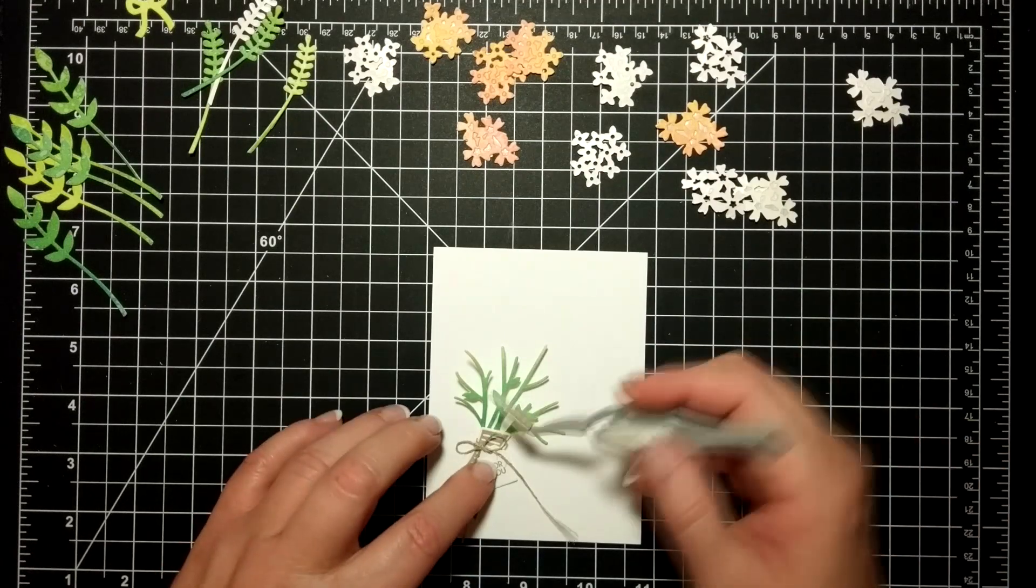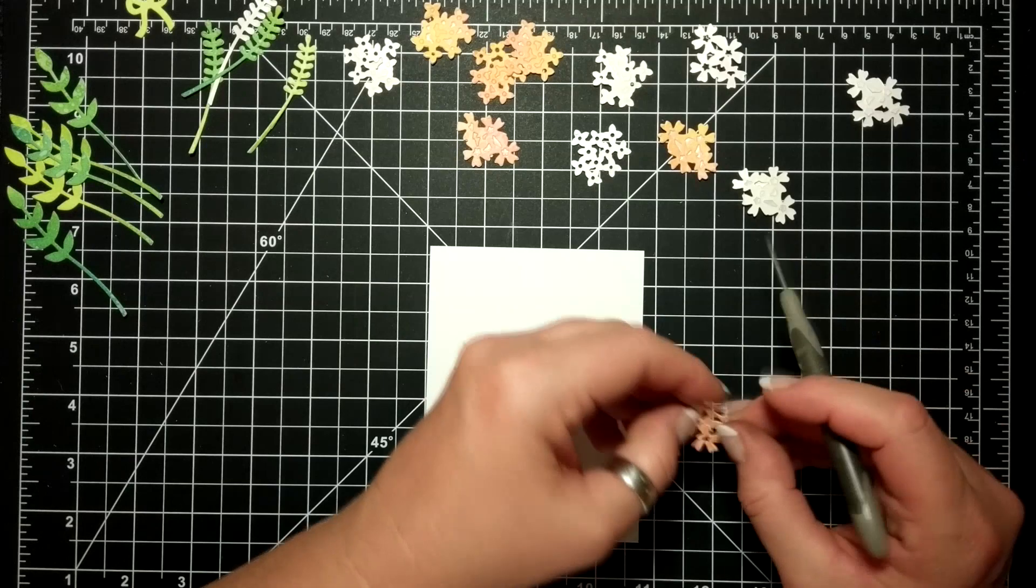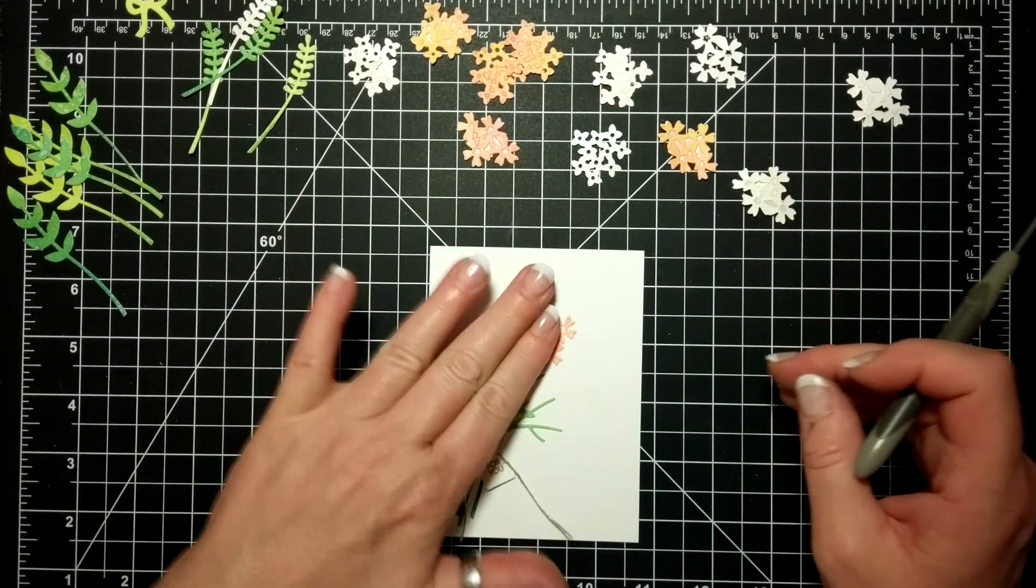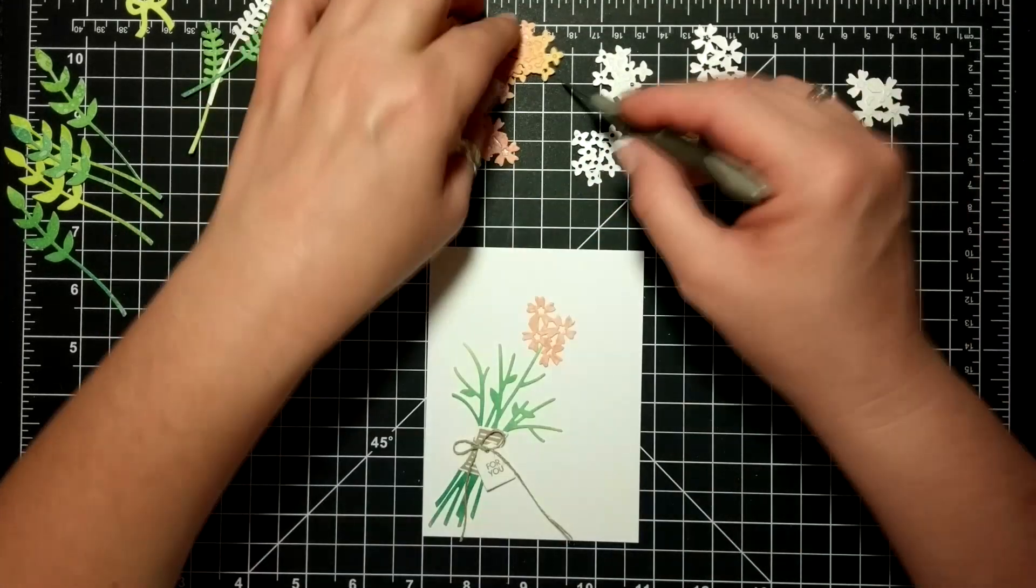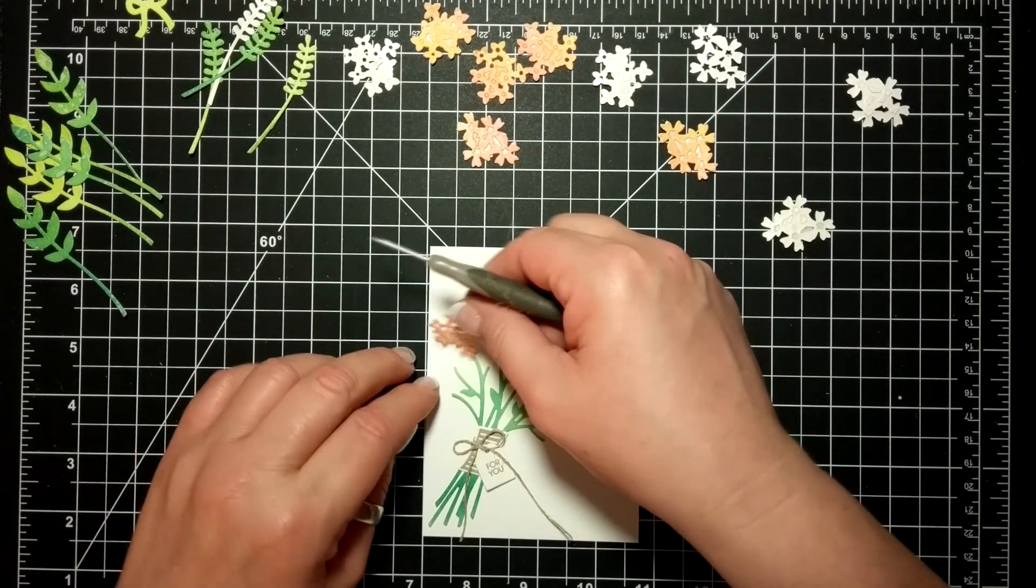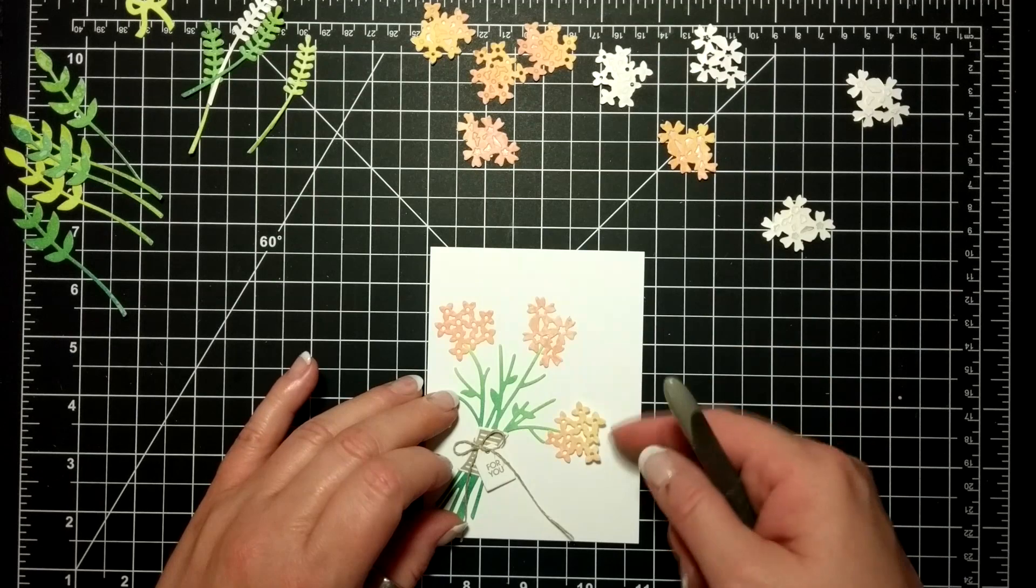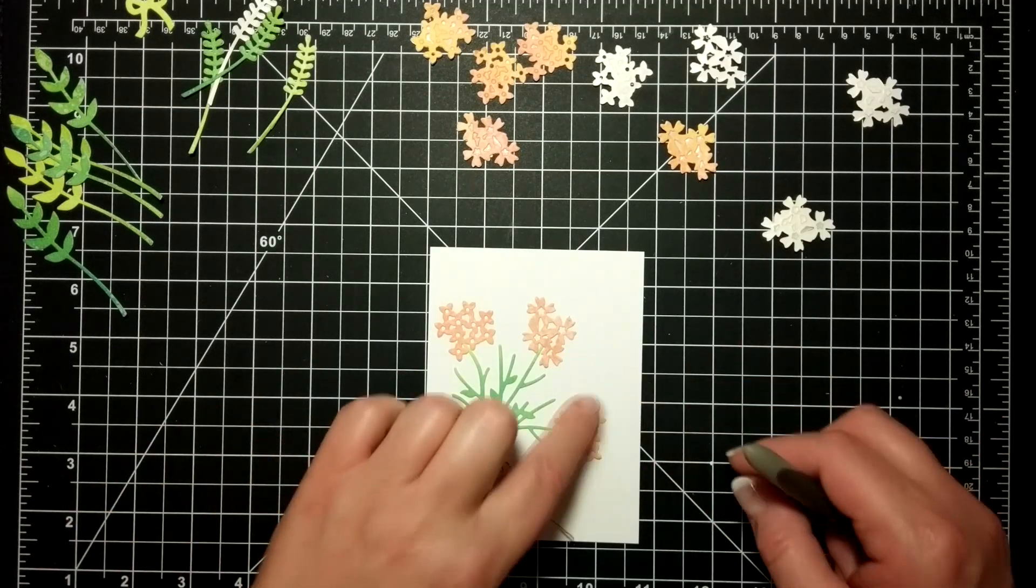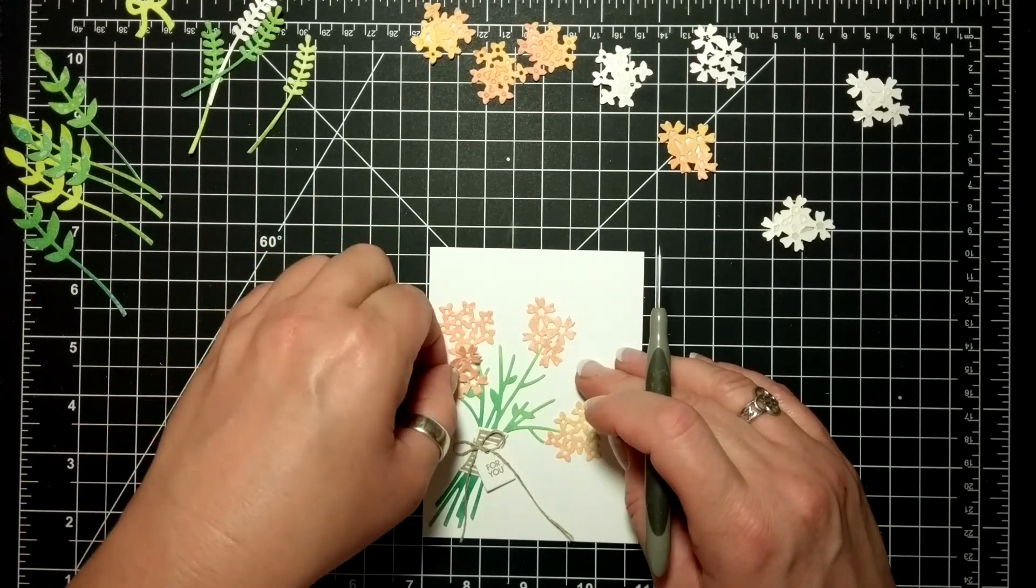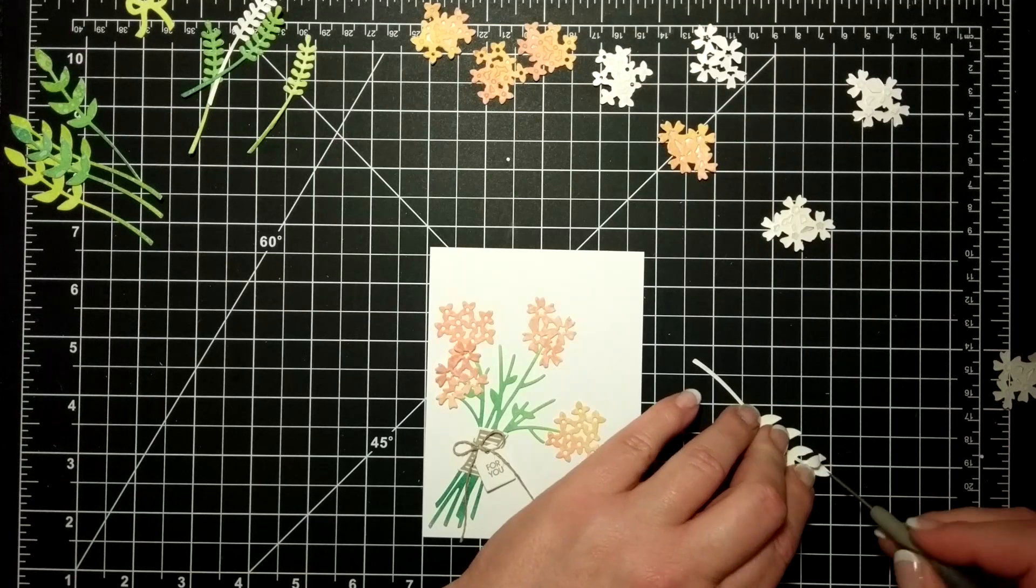The bouquet is going to go on top of that, so I'm not too worried if anything gets oozed out on the top. I patted that down and adhered that into place. So now comes the fun part—adhering all the blossoms. One of the great things about the adhesive sheets is that they basically make all your die cuts like stickers.